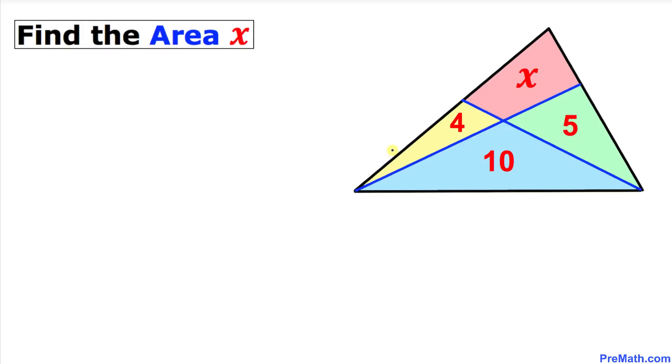Welcome to PreMath. In this video tutorial we have got this big triangle as you can see in this figure, and inside this triangle we got these three triangles with areas 4, 10, and 5, along with the area of this quadrilateral which we're going to call x. Now we are going to find the area of this quadrilateral which is x, so let's go ahead and get started with the solution to this interesting problem.